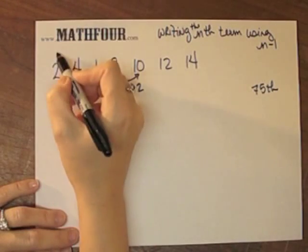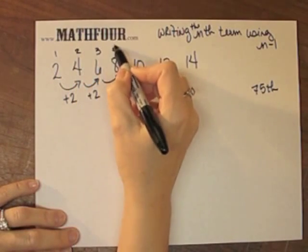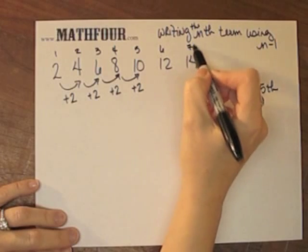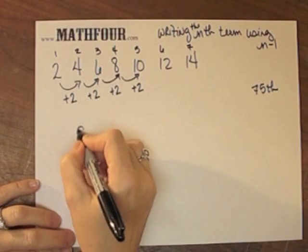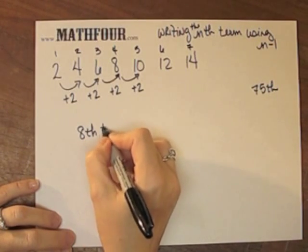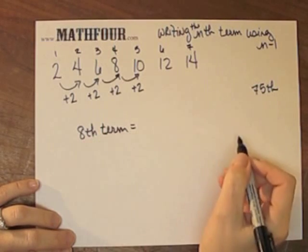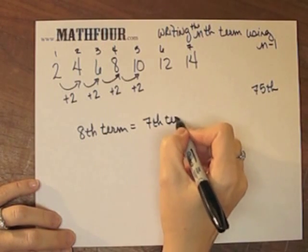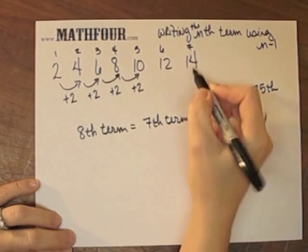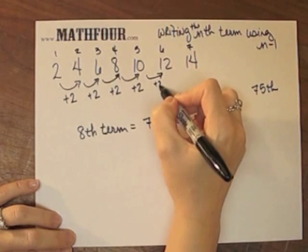So if this is the 1st, 2nd, 3rd, 4th, 5th, 6th, 7th term, to get the 8th term, I take the 7th term and add 2. Right? So I'm going to add 2 to each one.